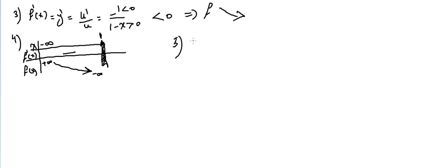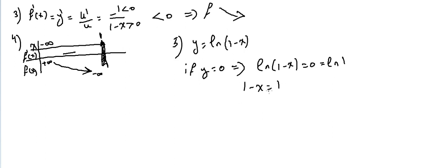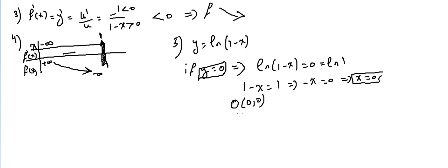Step 5: we find particular points. Since the function goes from plus infinity to minus infinity, it will cut the x-axis. Setting y = 0 means ln(1 - x) = 0 = ln(1), so 1 - x = 1, giving x = 0. The function passes through the origin (0, 0).